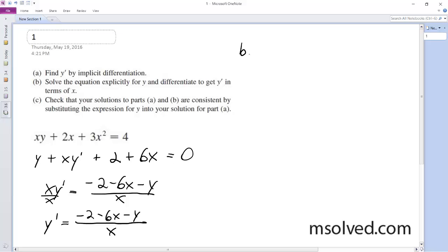this would be y is equal to 4 minus 2x minus 3x squared divided by x. And then we'd solve using the quotient rule,